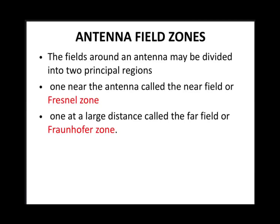Antenna field zones. We have studied about antennas and the basic parameters of an antenna: radiation pattern, beam area, beam efficiency, beam width, directivity, gain of an antenna, and the effective apertures of an antenna. All those basic parameters have been explained, and now we cover antenna field zones.